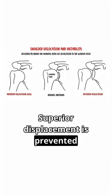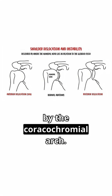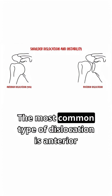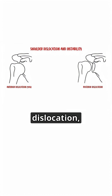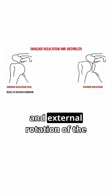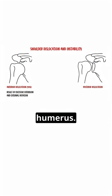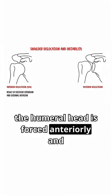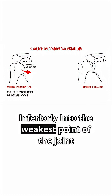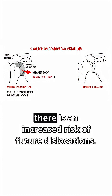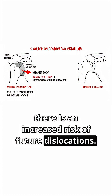Superior displacement is prevented by the coracoacromial arch. The most common type of dislocation is anterior dislocation, and is a result of excessive extension and external rotation of the humerus. In anterior dislocation, the humeral head is forced anteriorly and inferiorly into the weakest point of the joint capsule. If the joint capsule is torn, there is an increased risk of future dislocations.